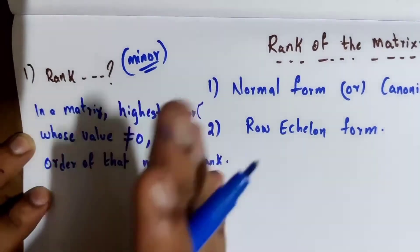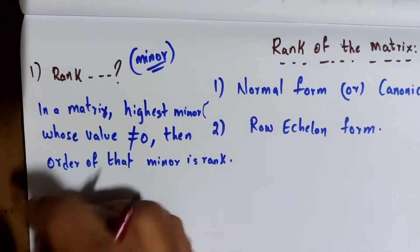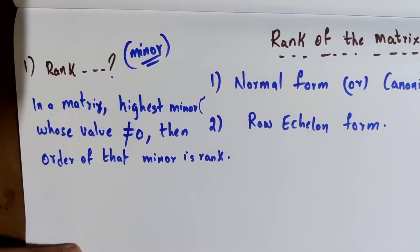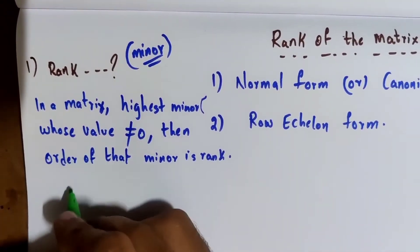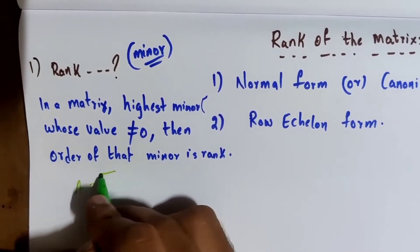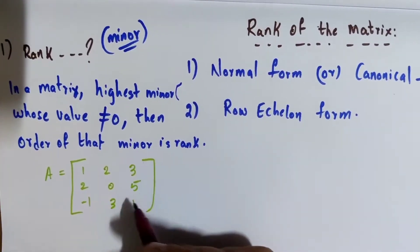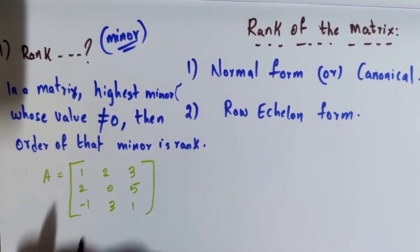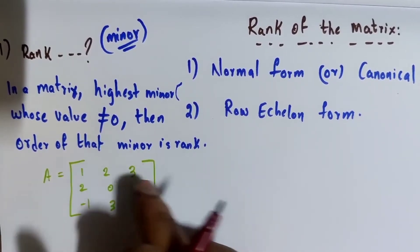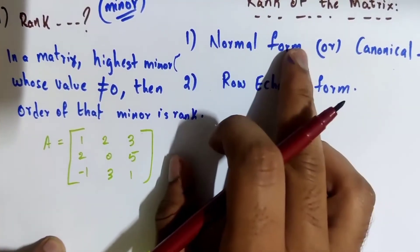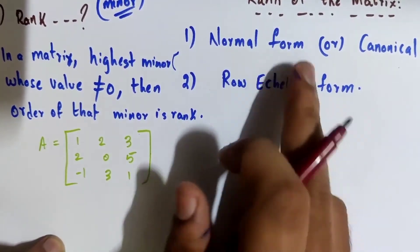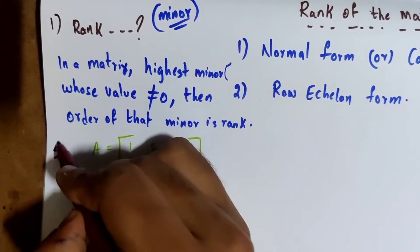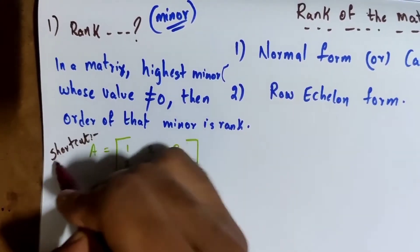Let me explain with an example so you will get clarity. I am taking one matrix A whose values are 1, 2, 3; 2, 0, 5; minus 1, 3, 1. The aim is to find the rank of this matrix. Before using normal form or row echelon form, know this shortcut — it is a very simple method for finding out the rank.